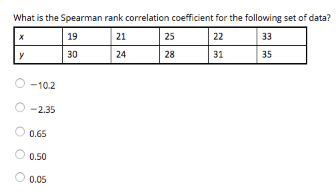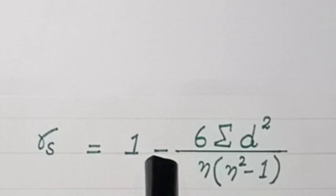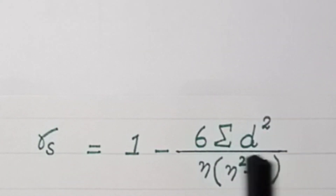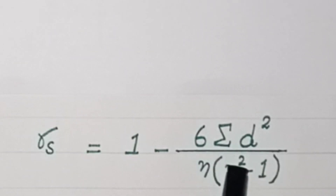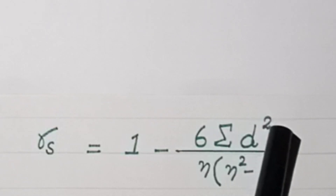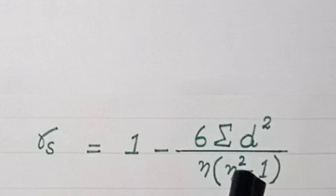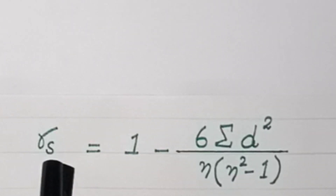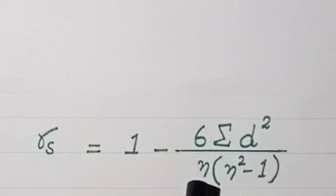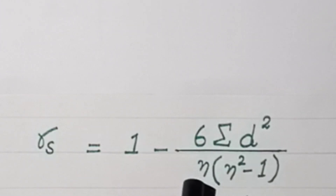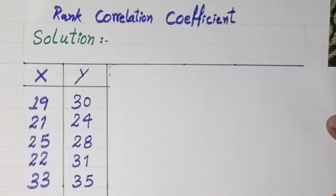We require the rank correlation value using the Spearman formula. The Spearman formula is: rank correlation = 1 minus 6·Σd² divided by n(n² − 1). We require the Σd² value first. We will calculate Σd² and then put it into this formula. Here, d denotes the difference, and n denotes the number of values. There are five values given to us for x and y, so n = 5.